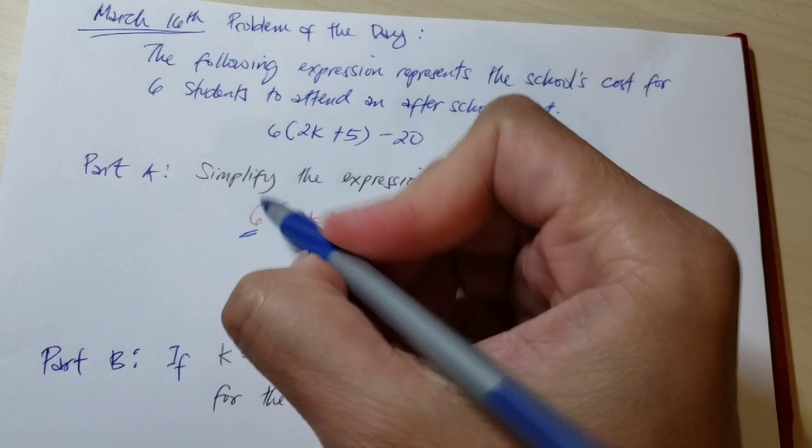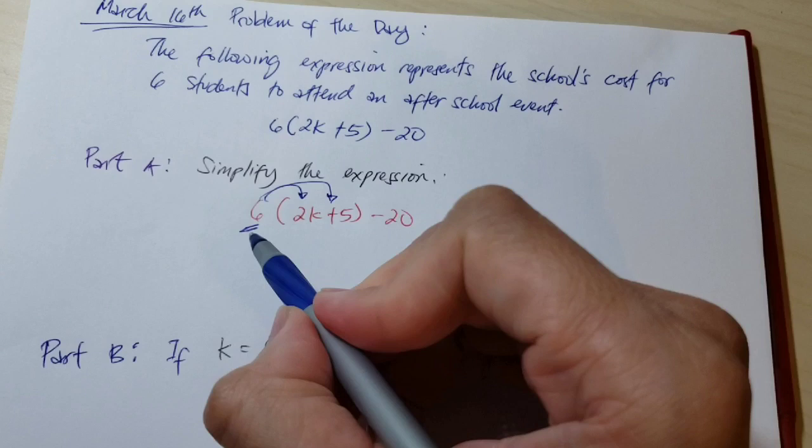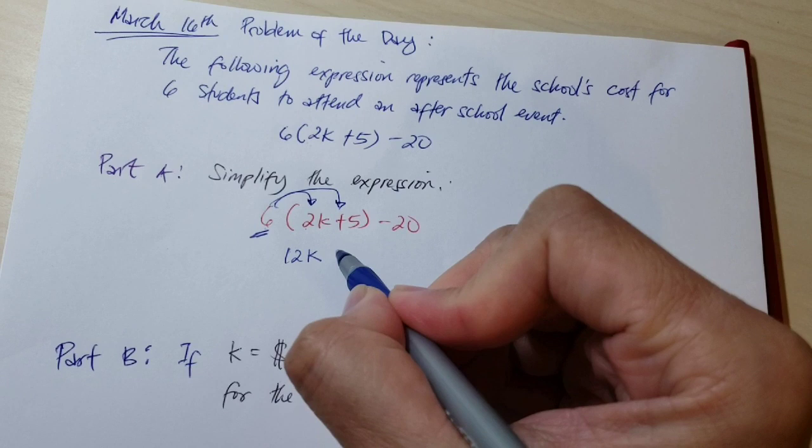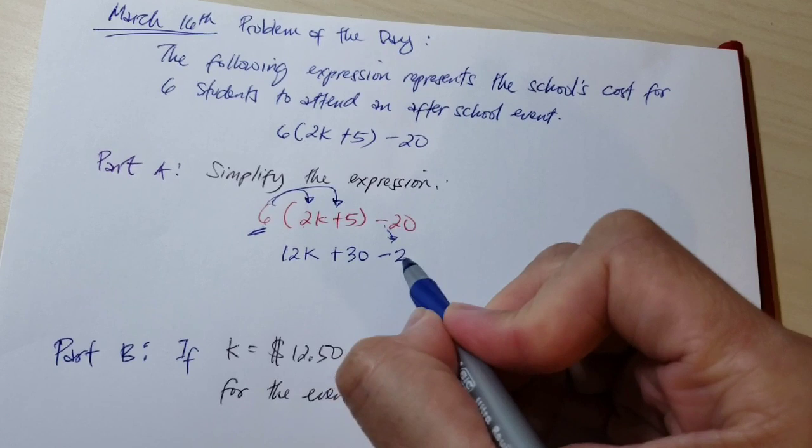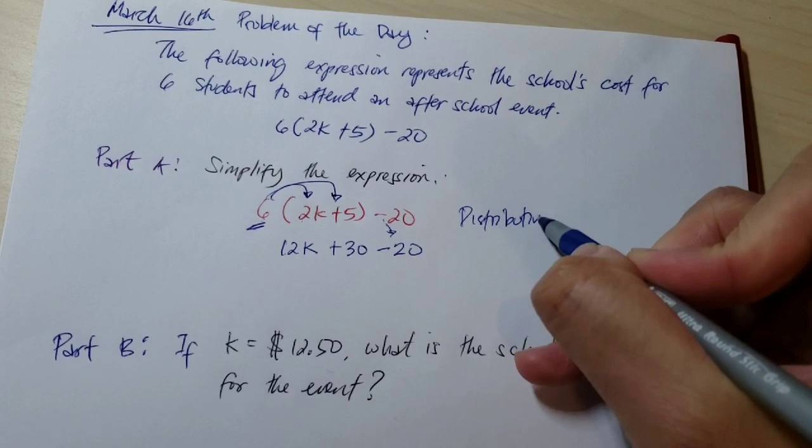So 6 times 2k is 12k, 6 times 5 is plus 30, and just copy down the other term which is minus 20. Once you apply the distributive property, you're going to combine like terms.